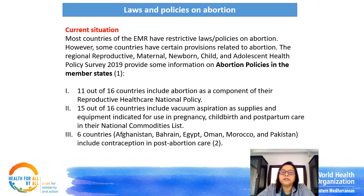Though the majority of Eastern Mediterranean countries have restrictive abortion laws, among the 16 countries that participated in the RMNCH policy survey, 11 included abortion care as a component of national reproductive health policy. 15 countries included vacuum aspirators in their national commodity list. Afghanistan, Bahrain, Egypt, Oman, Morocco, and Pakistan have included contraception in post-abortion care guidelines.